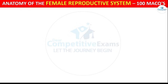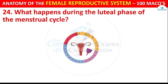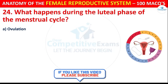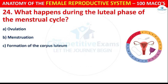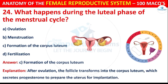Question number 24: What happens during the luteal phase of the menstrual cycle? Options are: Ovulation, Menstruation, Formation of the corpus luteum, or Fertilization. The correct answer is C, i.e. formation of the corpus luteum. After ovulation, the follicle transforms into the corpus luteum, which secretes progesterone to prepare the uterus for implantation.